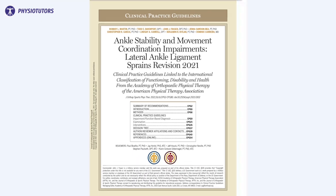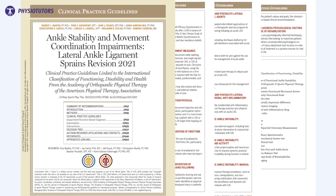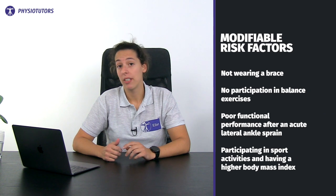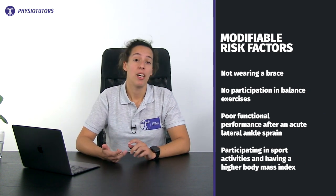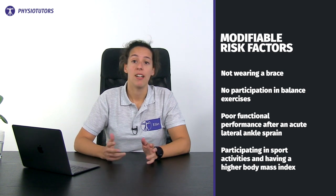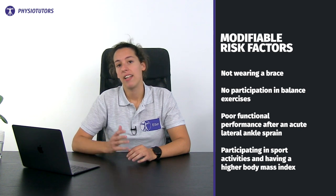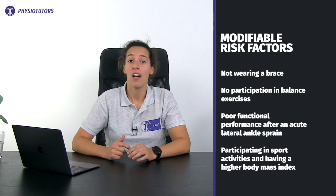Hi and welcome to Physiotutors. The clinical practice guideline describes several risk factors as well as diagnostic findings that should be assessed in your patient. Risk factors for chronic ankle instability include not wearing a brace, no participation in balance exercises, poor functional performance after an acute lateral ankle sprain, participating in sport activities, and having a higher body mass index. These risk factors are modifiable and can thus be included in treatment.